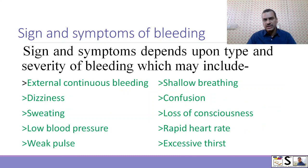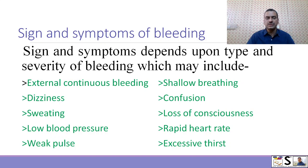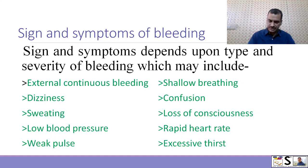Now, what are the signs and symptoms of bleeding? Signs and symptoms depend upon the type and severity of bleeding, which may include external continuous bleeding that can be seen, shallow breathing, dizziness, confusion, sweating, loss of consciousness, low blood pressure, rapid heart rate, weak pulse, and excessive thirst.